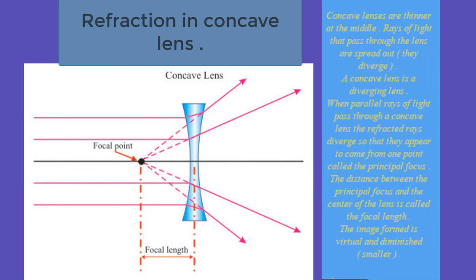Refraction in concave lens. Concave lenses are thinner at the middle. Rays of light that pass through the lens are spread out. They diverge. A concave lens is a diverging lens. When parallel rays of light pass through a concave lens the refracted rays diverge so that they appear to come from one point called the principal focus. The distance between the principal focus and the center of the lens is called the focal length. The image formed is virtual and diminished, smaller.